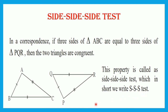Let's understand this test with the help of a figure. Here you can see triangle ABC and triangle PQR. Side AB is congruent with side PQ, side BC is congruent with side QR, and side AC is congruent with side PR. That means all three sides of triangle ABC are congruent with all three sides of triangle PQR. Therefore, these two triangles are said to be congruent by the SSS test of congruency.